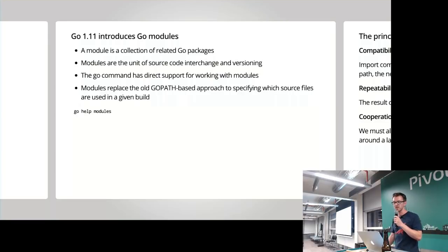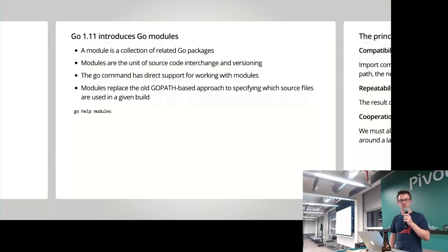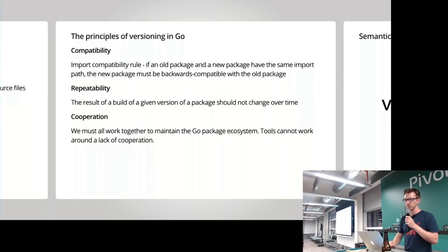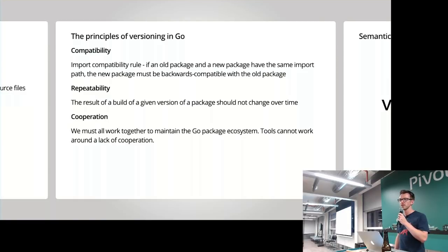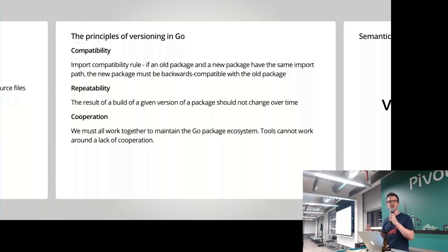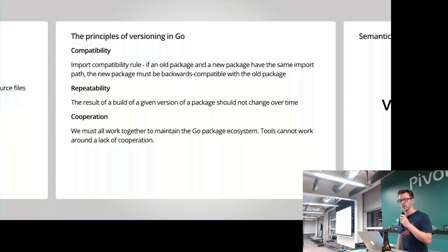The idea is also that modules will replace the concept of Go path over time, specifying what version of source files should be used in any given build. Underlying all of this are three key principles of versioning in Go: compatibility, repeatability, and cooperation. I'm shamelessly stealing from Russ's talk in Singapore back in May on this — if you haven't seen it, definitely go and watch it, as it goes into quite a bit more detail on some of the more complex situations.